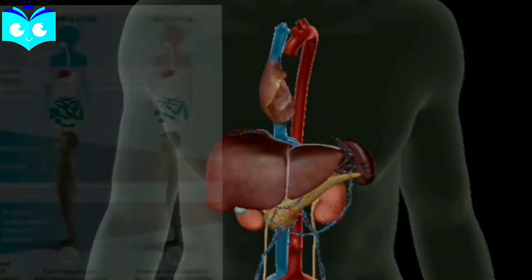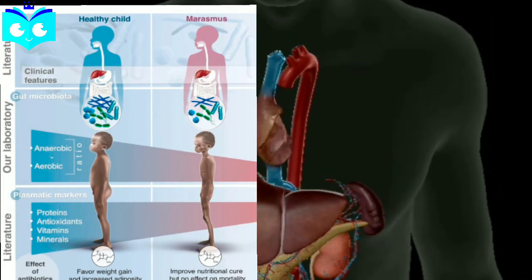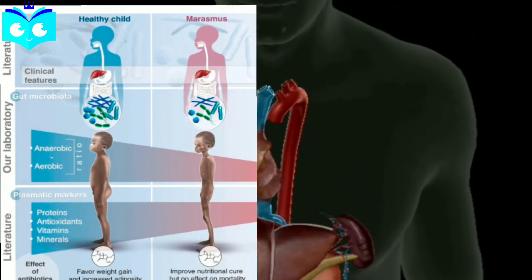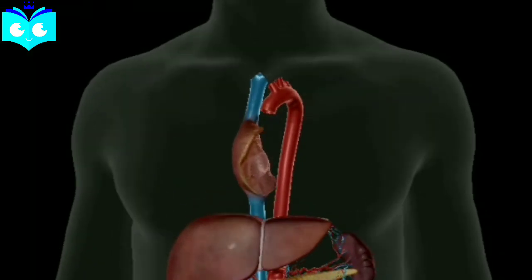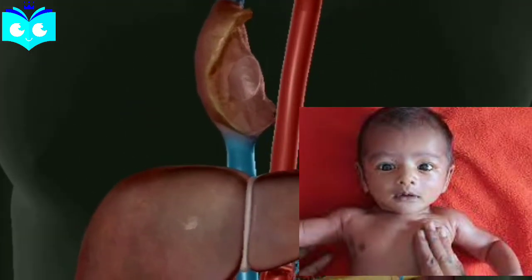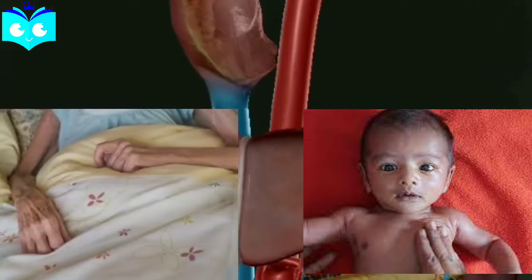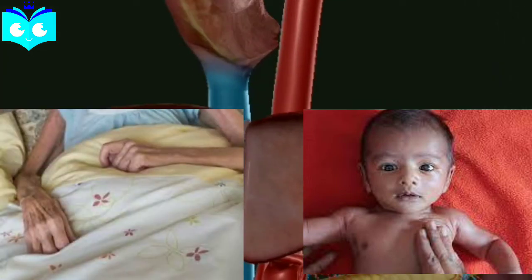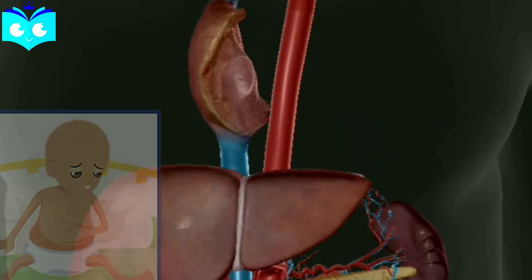Marasmus is a protein-energy malnutrition deficiency disease. It is found in infants less than a year old whose mother's milk is replaced too early by other foods with poor protein and calorie content. This leads to extreme emaciation of the body, thinning of limbs, dry skin, and impaired growth of tissues. Growth and development of the body, brain, and mental faculties are all impaired.